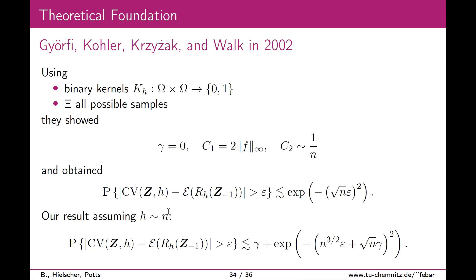Moderator: We discussed some strategies to find good point sets, which is a different project. There is a paper by Haberstich, Stich, and Perron — and Albert Cohen will talk about a greedy strategy to find good nodes, though heuristically without guarantees of optimality.